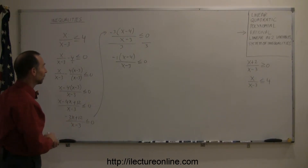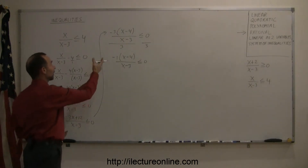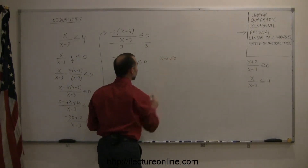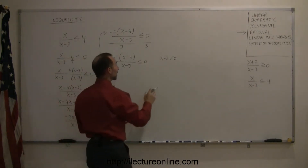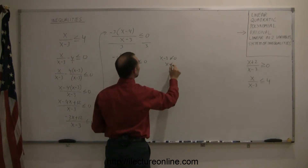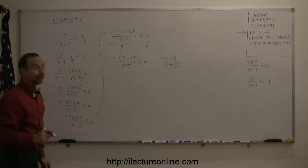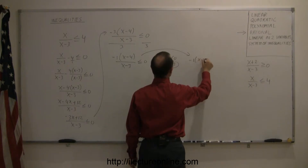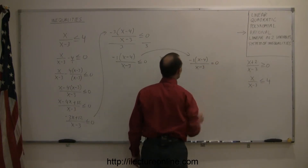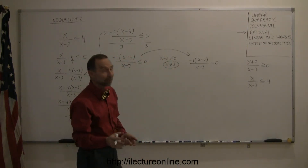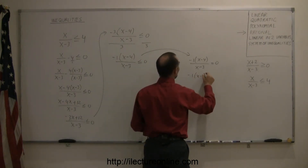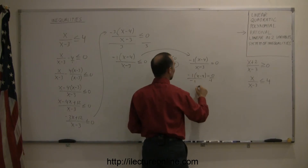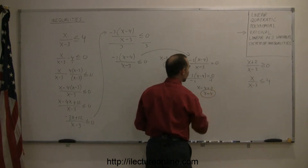Now you're ready to solve the problem. You're trying to find all values of x that satisfy the inequality. First, since you have a denominator, x minus 3 cannot equal zero, because if the denominator equals zero you have an undefined fraction — so x cannot equal 3. Next, write the equivalent equation by changing the inequality sign to an equal sign: minus 1 times x minus 4, divided by x minus 3, equals zero. If a fraction equals zero, the numerator must equal zero, so minus 1 times x minus 4 equals zero. Dividing both sides by negative 1, you get x minus 4 equals zero, or x equals 4 — there is your other critical point.